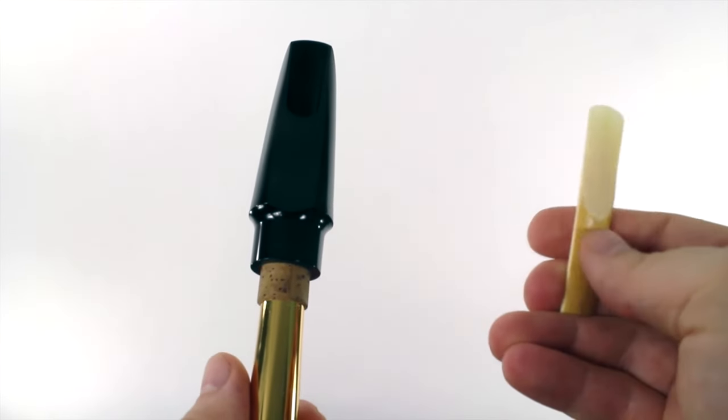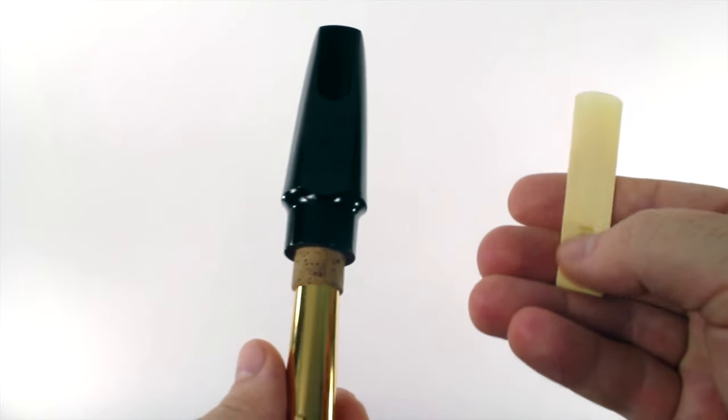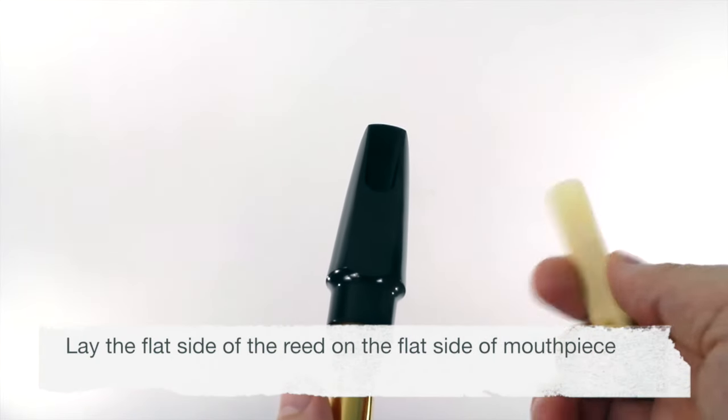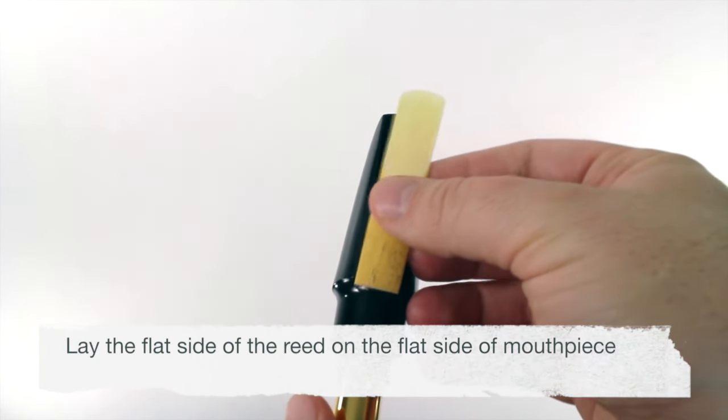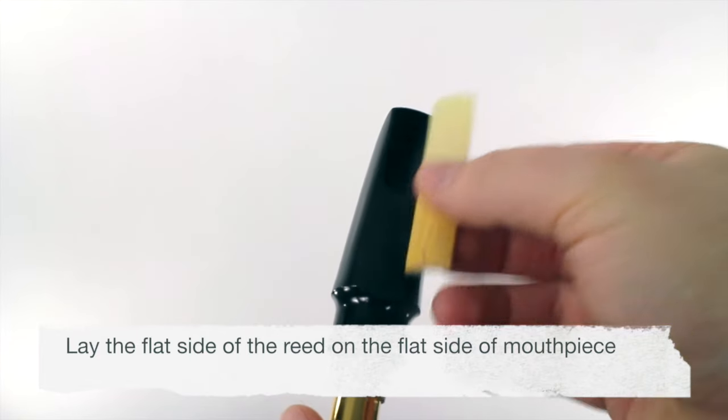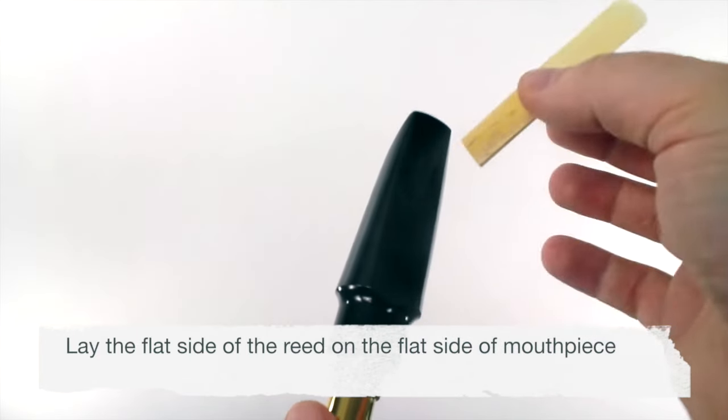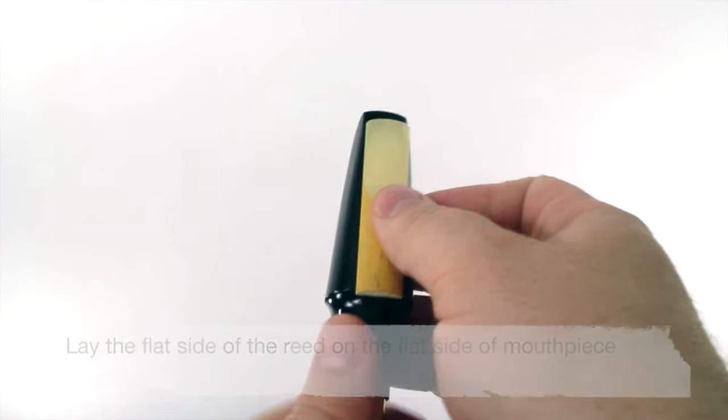Here's our reed. We have the flat side here. We're going to lay the reed down on the flat side of the mouthpiece just like this. Don't try to put it inside the hole. It lays on top of the mouthpiece like this.